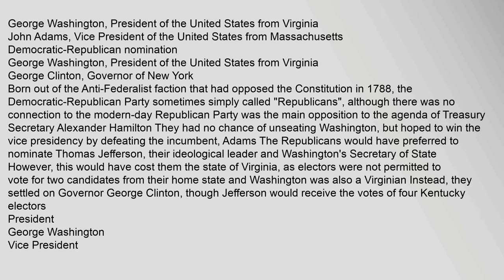Federalist nomination: George Washington, President of the United States from Virginia; John Adams, Vice President of the United States from Massachusetts. Democratic-Republican nomination: George Washington, President of the United States from Virginia; George Clinton, Governor of New York. Born out of the anti-federalist faction that had opposed the Constitution in 1788, the Democratic-Republican Party — sometimes simply called Republicans, although there was no connection to the modern-day Republican Party — was the main opposition to the agenda of Treasury Secretary Alexander Hamilton.